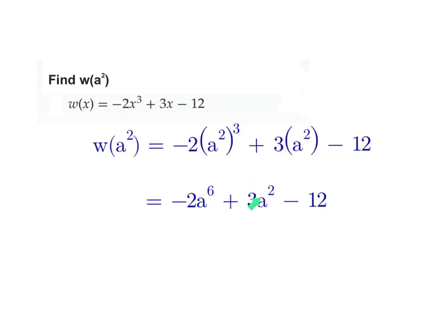And I can't combine these together. Addition, in order to add or subtract terms together, you have to have the same power raised to the same variable. And I don't have that, so I'm actually done. That's as far as we can go. So that's what w of a² is.